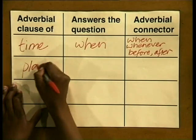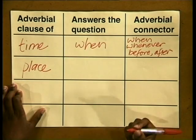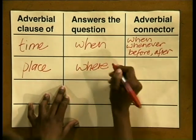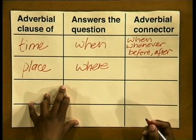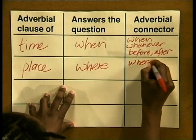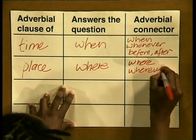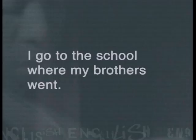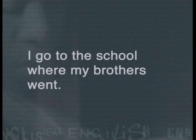Now let's move on and look at the next type of adverbial clause, which is the adverbial clause of place. The adverbial clause of place tells us where the main clause took place, and it could be introduced by the words 'where' or 'wherever.' Here's a sentence where the adverbial clause tells us more about where the main clause will occur: 'I go to the school where my brothers went.' The main clause is 'I go to the school.' The adverbial clause is introduced by the connector 'where.'